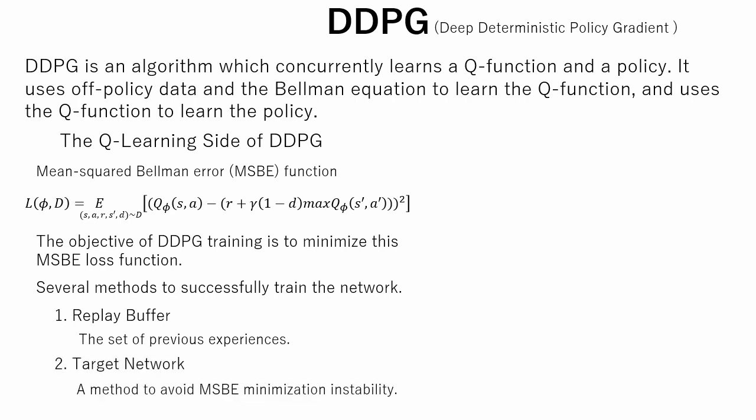The second is target network. By using target network we can stabilize the learning. In DDPG style algorithms, the target network is updated once per main network update by polyac averaging.